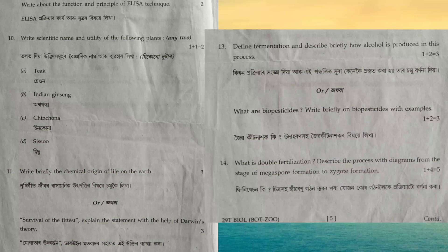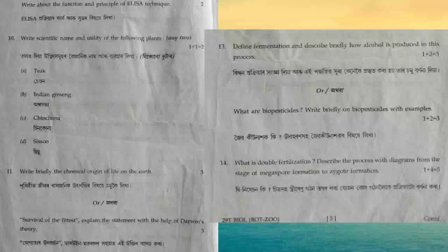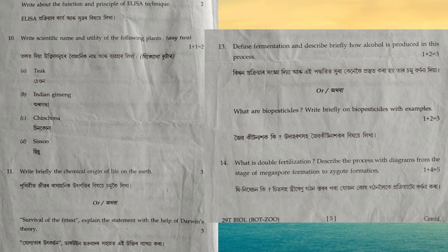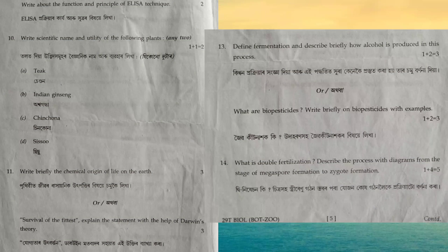Next question: write the scientific name and utility of the following plants. Teak: scientific name is Tectona grandis, used in making furniture, bridges, and railway tracks. Indian ginseng or Ashwagandha: scientific name is Withania somnifera, used to cure menstrual problems. Cinchona: scientific name is Cinchona officinalis, used to cure malaria — quinine is the main drug obtained from it. Sissoo: scientific name is Dalbergia sissoo, a timber-yielding plant used in making furniture and bridges.